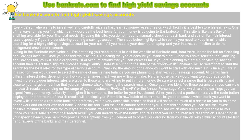Selecting the type of account you want to start: once you have selected the Checking and Savings tab, you will see a drop-down list of account options that you can canvas for. If you are planning to start a high-yielding savings account, then select the high-yield slash MMA savings entry. There is a button to the side of the drop-down list labeled Go, so select that to start the search for the best rates for this type of savings account.